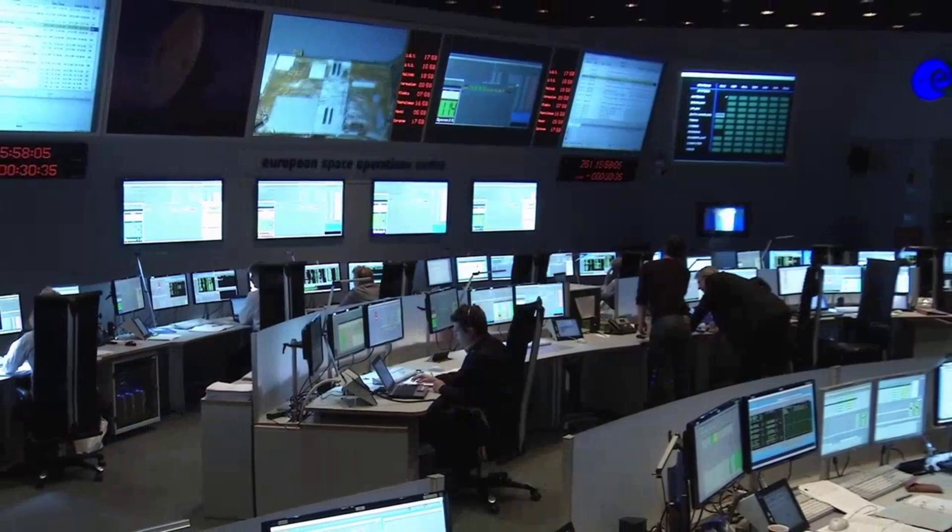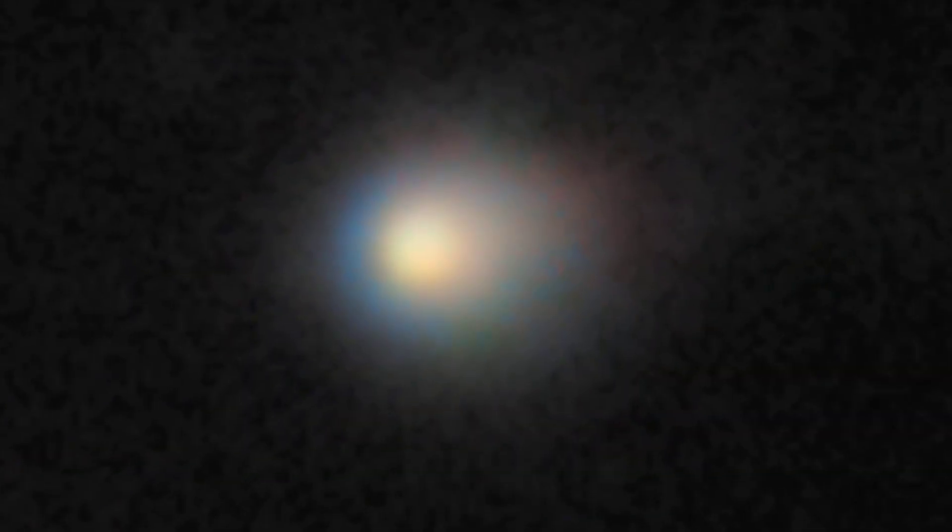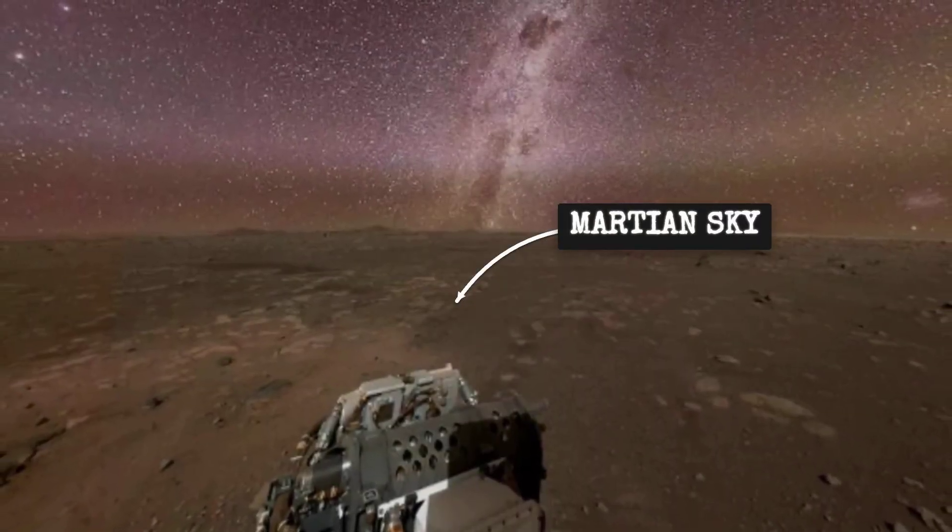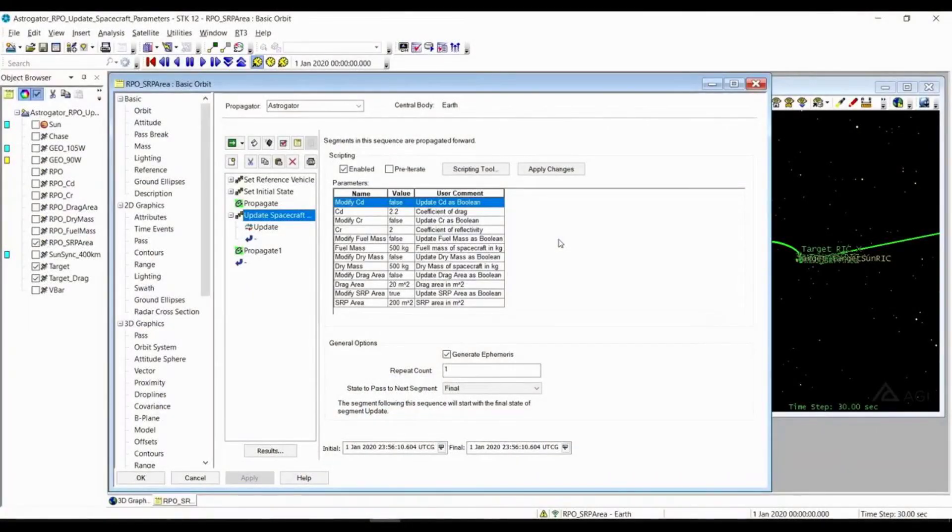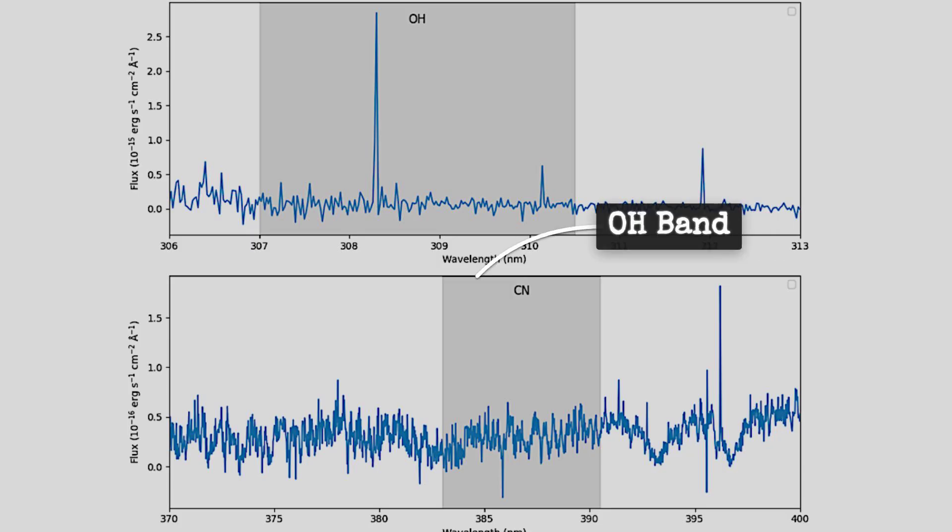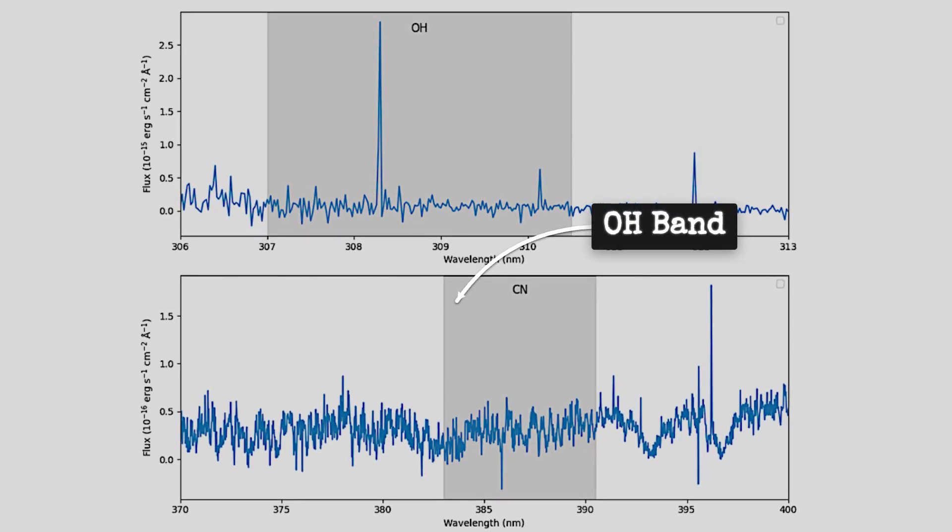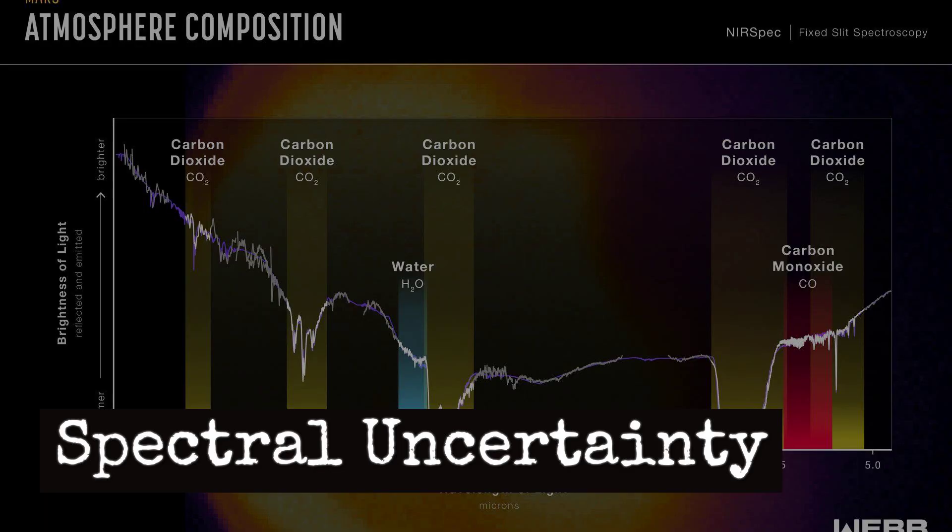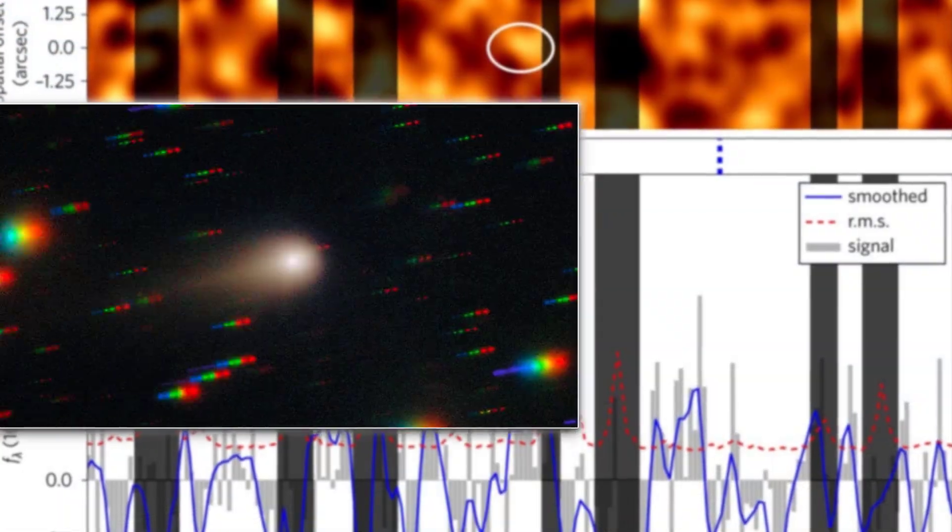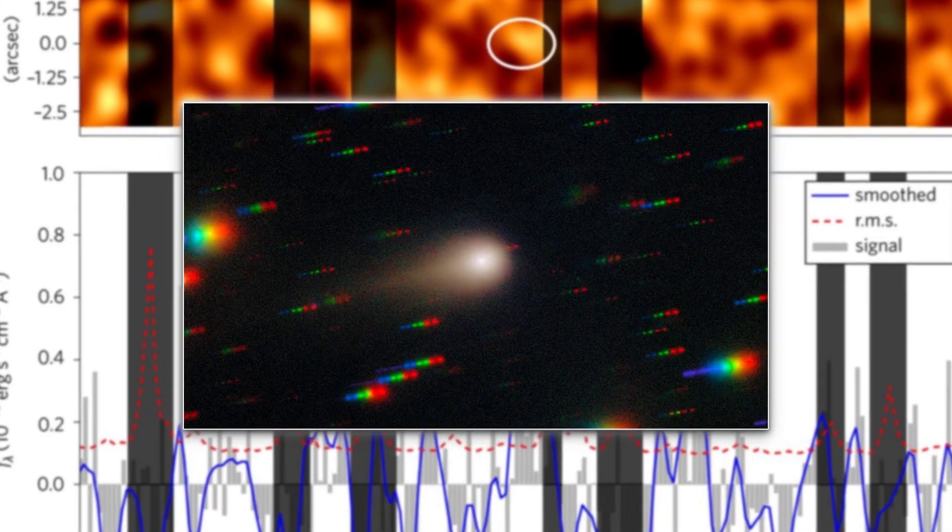But the data arriving on the ground told a more uncertain story. The coma and tail of 3I-Atlas, already faint in visible light, were even harder to separate from the Martian night sky in the infrared and ultraviolet. The spectrometer's integration times, set for Mars' bright surface or thick atmosphere, struggled to accumulate enough signal from a diffuse cloud 30 million kilometers away. In single exposures, the spectra showed little more than noise and the familiar signature of Mars itself. Stacking hundreds of frames became the only way forward, an effort to tease out any real trace from the static.